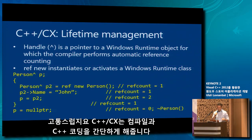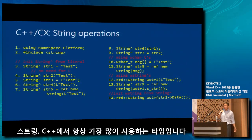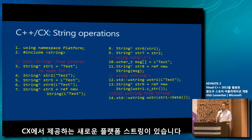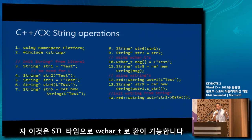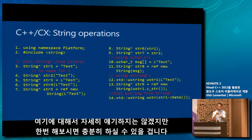String is one of the most widely used types in C++. There is a new Platform::String in C++ CX, which is implicitly convertible to the STL string type as well as the wchar_t array type. And these are all the operations that are allowed on string — you can experiment with it yourself later on.